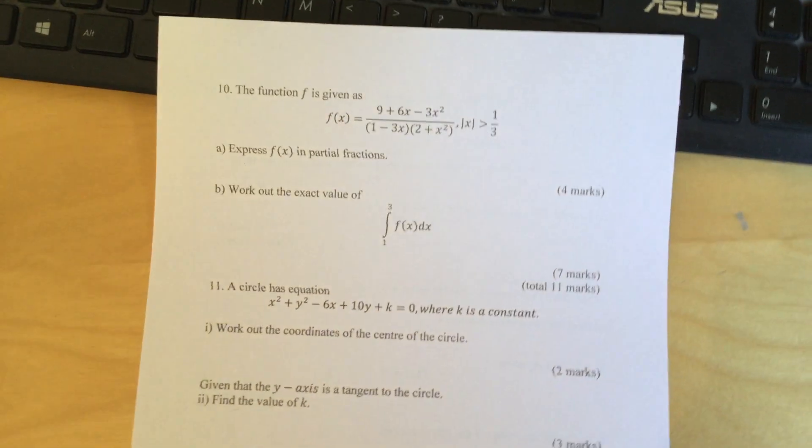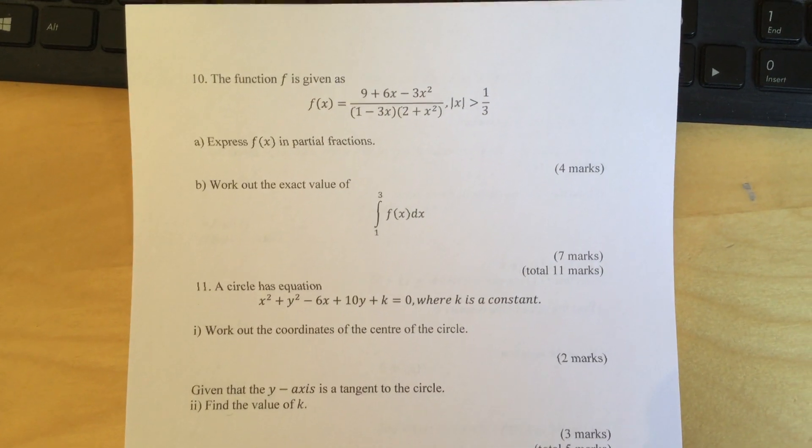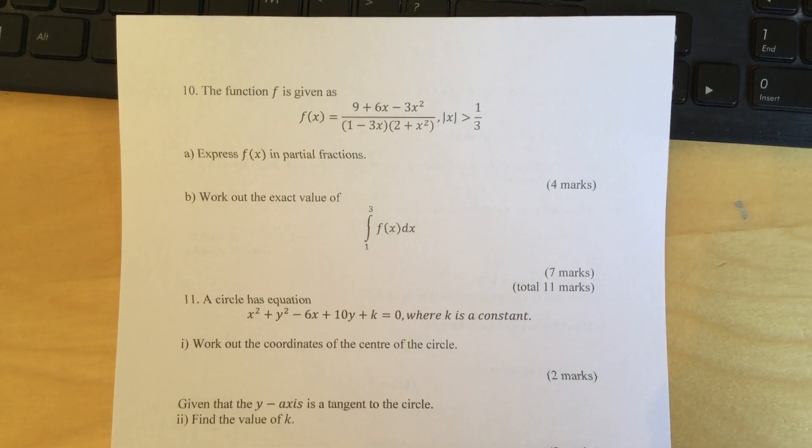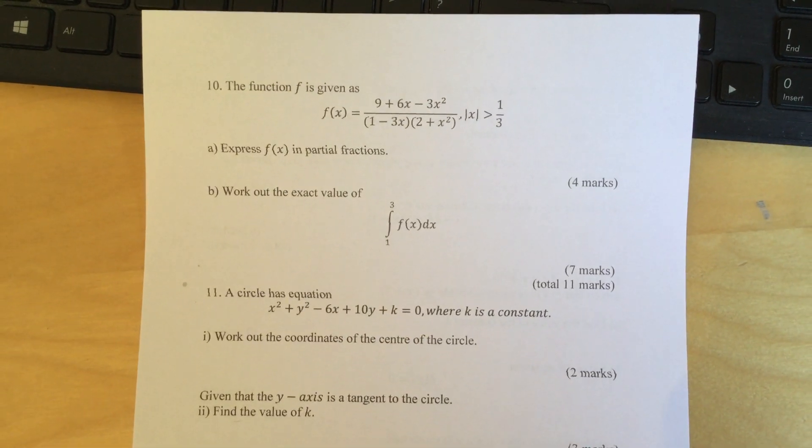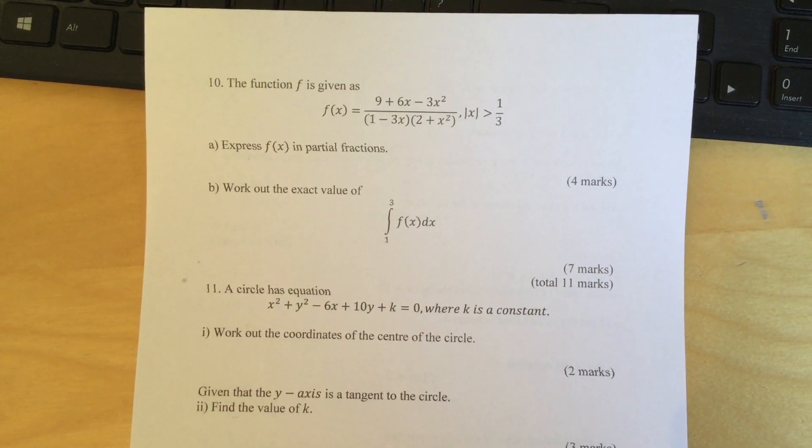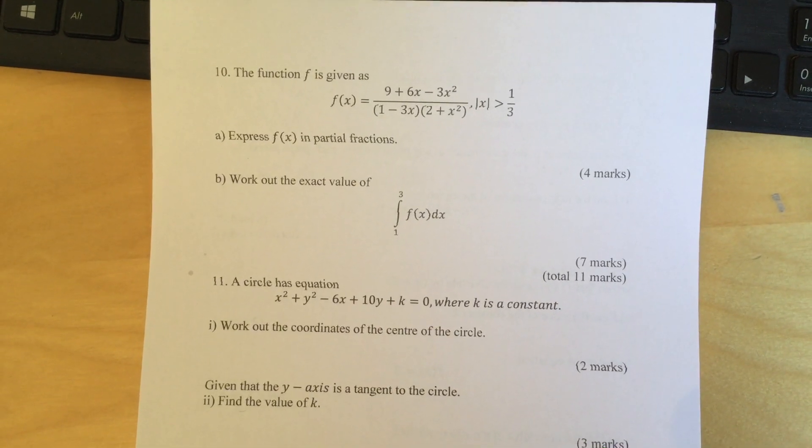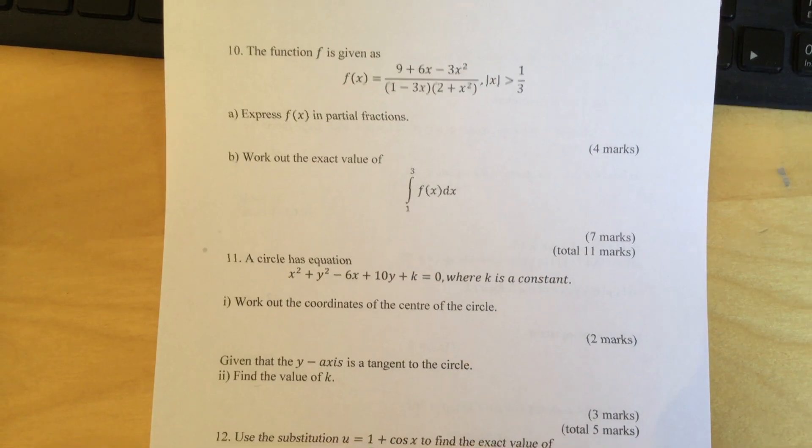Question 10: The function f is given as f(x) = (9 + 6x - 3x²)/((1 - 3x)(2 + x²)), where |x| > 1/3. Express f(x) in terms of partial fractions. Part B: Work out the exact value of ∫₁³ f(x) dx.